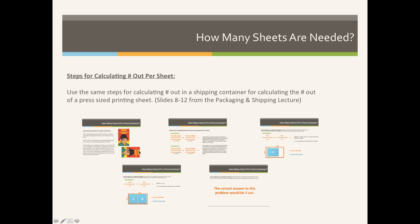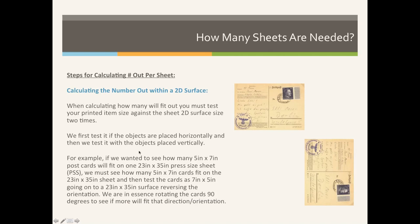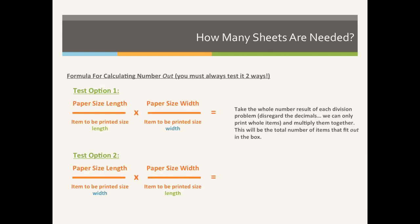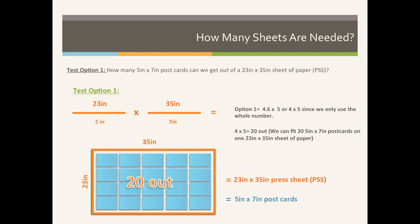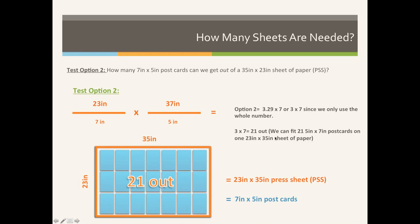This is the formula that you want to print out — make sure you have this slide printed out for your cheat sheet for exam number three, as you'll be using it frequently. To repeat that very quickly: you will take the sheet size, which in this case is 23 by 35, and divide it by the item size on the sheet, which in this case is 5 by 7. Take the whole number — so when you come up with 4.6 times 5, you would take 4 times 5 because that's the whole number, giving you 20 out. We always test the option two scenario because in this case option two gives us 21 out.